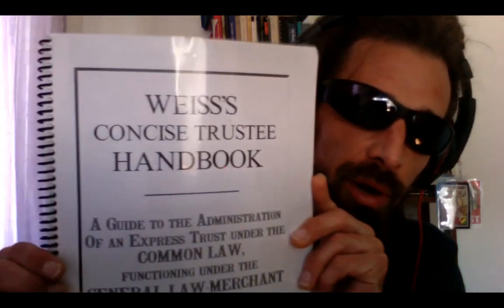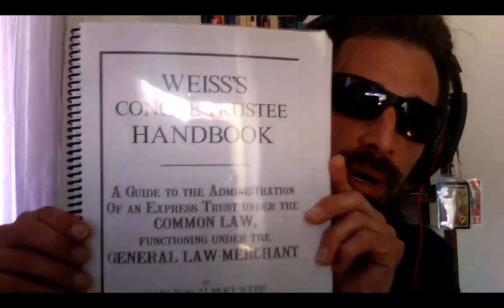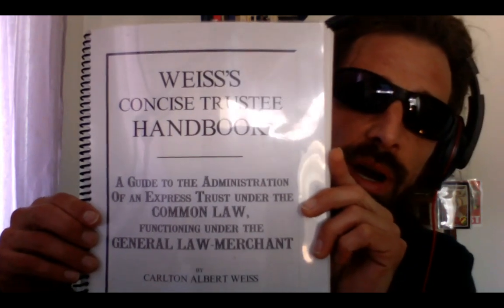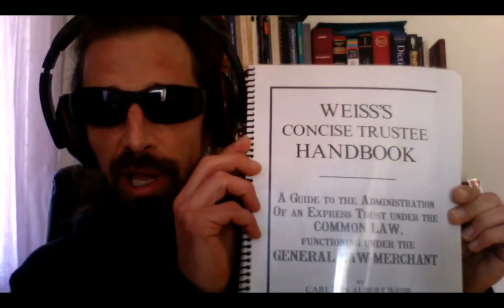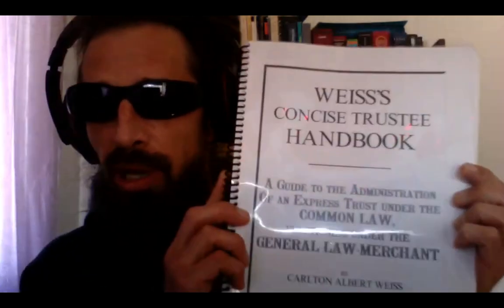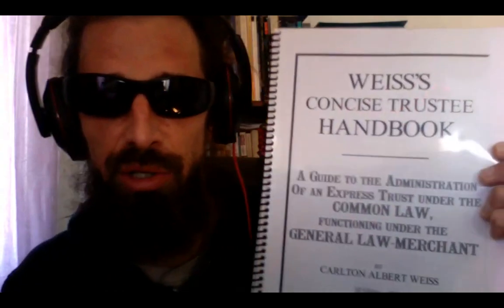What's going on, brothers and sisters? This is your brother Rasta G, aka Greg Ward, coming at you from the Common Law Rights Society. We're coming with Part Two of the reading from Carlton Weiss's Concise Trustee Handbook — a guide to the administration of an expressed trust under the common law, functioning under the general law merchant. If you're interested in getting a copy, we'll be offering a limited supply that we'll print out and send to you for a nominal fee, or you can get it online.